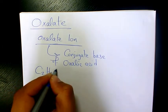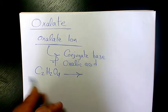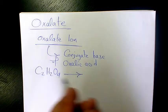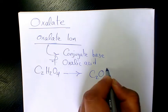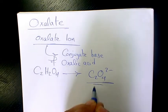Oxalic acid is C2H2O4, and when it loses these two hydrogens, it becomes C2O4^2-, which is called oxalate.